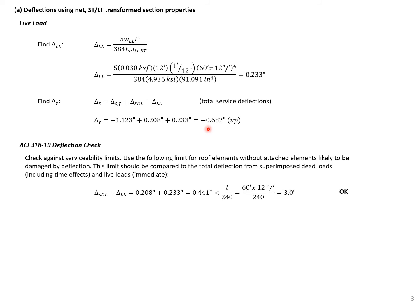So even after live load, we still have an upward deflection. The ACI 318-19 deflection check for this type of element requires that deflections from superimposed dead loads and live loads are less than L/240. Adding those two deflections together, the summation is 0.441 inches, and we compare that to our deflection limit of 3 inches — our deflections are okay in this case.